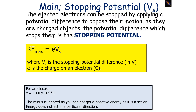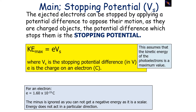To summarise: ejected electrons can be stopped by applying a potential difference to oppose their motion, since they are charged objects. The potential difference which stops the electrons is called the stopping potential. We can say that the maximum kinetic energy is equal to e, the charge on an electron in coulombs, times Vs, the stopping potential in volts. Remember, e is always 1.6 × 10⁻¹⁹ coulombs. This assumes the kinetic energy of the photoelectrons is a maximum value, and we can use this equation to calculate the maximum kinetic energy of the electrons.